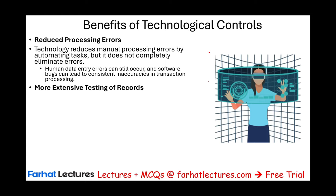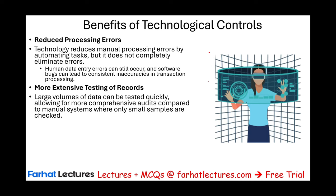Another benefit of technology is more extensive testing of records. When a company has a large volume of data — and these days all companies want data because information is power — technology allows that data to be tested quickly, whether internally or by the auditor, compared to manual systems where only small samples are checked. You have more checks because you can test a large dataset using technology.